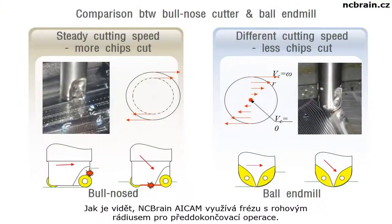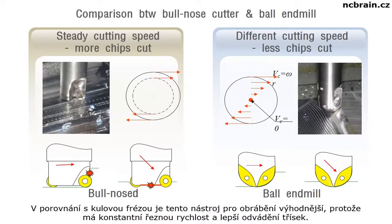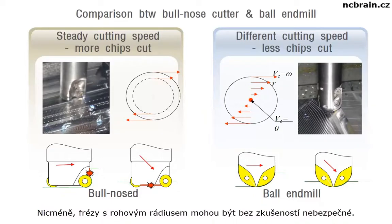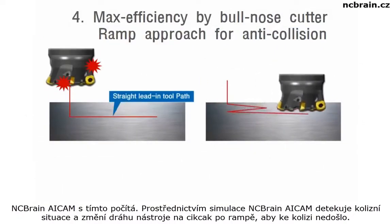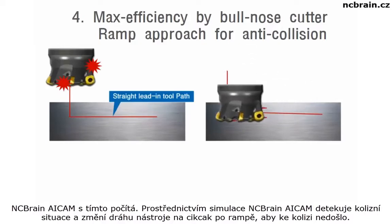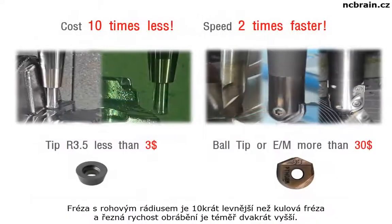As you can see, AI Cam uses a bullnose cutter, which makes semi-finish operation more efficient. Compared to ball end mill, this tool has more advantage for machining because its speed is constant and better for chip elimination. However, bullnose tool could be dangerous without experience. AI Cam is different — through simulation, AI Cam detects the collision area and changes to a zigzag ramp toolpath to avoid collision.